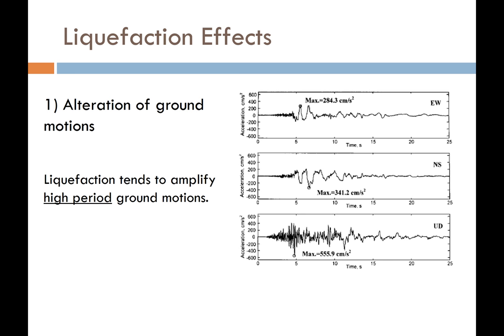The first effect is the alteration of the ground motion. When soil liquefies, the shear modulus goes down drastically. If the shear modulus goes down drastically, then the natural period of the soil goes up drastically as well. The soil loses stiffness, it loses strength, and it increases in its natural period. Because of that, that soil layer is going to filter out a whole bunch of the low-period, high-frequency ground motions — they won't get through that liquefied layer. The layer acts like a base isolation layer.